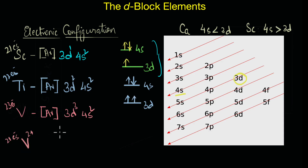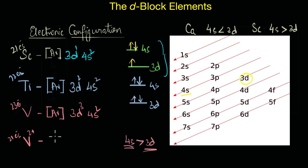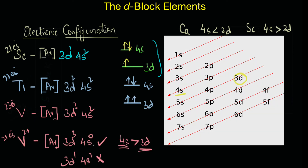Electrons are always removed from the higher energy level. Because the 4s level is slightly higher in energy than 3d, electrons are lost first from the 4s orbitals and then from the 3d orbitals. That means V²⁺ has the configuration [Ar]3d³ — not [Ar]3d¹4s². The electrons are lost from 4s and not from 3d, because 4s is slightly higher in energy.